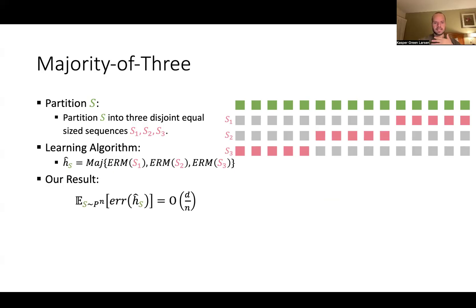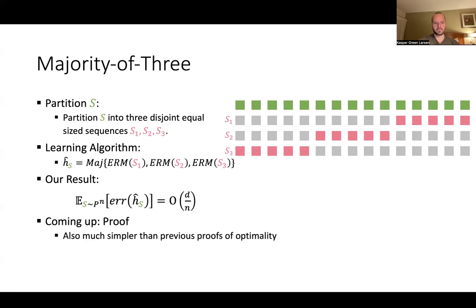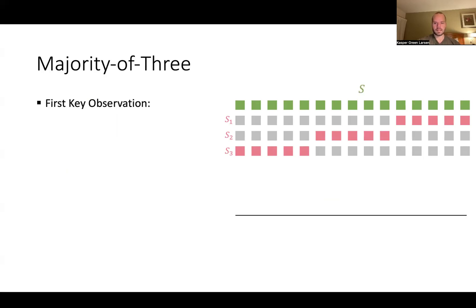Our main result is that this simple algorithm — partition the training set S into three disjoint equal pieces S1, S2, S3, run ERM on each, and output a majority vote — also achieves the optimal expected error of order d/n. And not only is the algorithm much simpler than before, the proof is also much simpler.